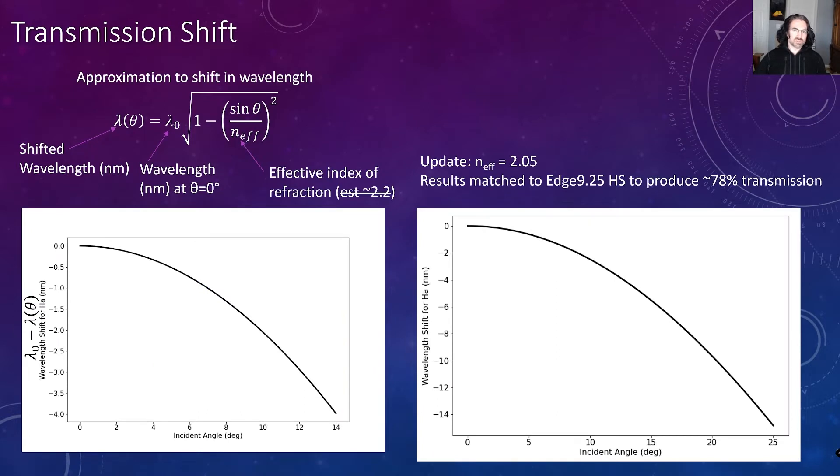First off, we need to consider the transmission shift to calculate these characteristics. You can use this equation, but to use this equation, you need an index of refraction, this n effective. I'd previously used a value of 2.2 based on some guessing and checking, and after a little time thinking about it, I realized that I could check this value so that I get a similar transmission as to what I observed out of my images, and when I did that, it seemed like an effective index of refraction that worked a little bit better was 2.05, so that it produced an average 78% transmission like we saw in the data.